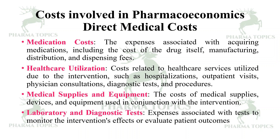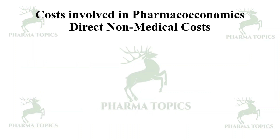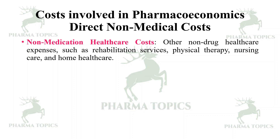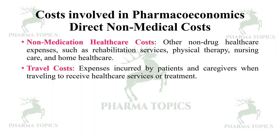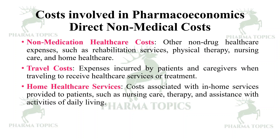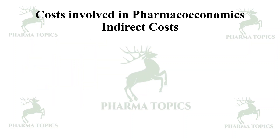Then direct non-medical costs. First is non-medication healthcare costs — other non-drug healthcare expenses such as rehabilitation services, physical therapy, nursing care, and home healthcare. Then travel costs — expenses incurred by patients and caregivers when traveling to receive healthcare services or treatment. Then home healthcare services — costs associated with in-home services provided to patients such as nursing care, physiotherapy, and assistance with activities of daily living.